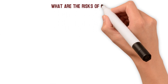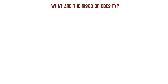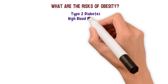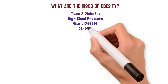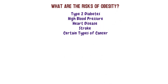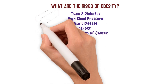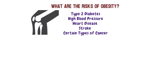What are the risks of obesity? Obesity increases your risk for many serious health conditions, like type 2 diabetes, high blood pressure, heart disease, stroke, and certain types of cancer. These conditions can shorten your life and make it harder to enjoy the time you have. Being obese also puts a strain on your joints, which can lead to pain and disability. And it can make everyday activities more difficult and tiring.